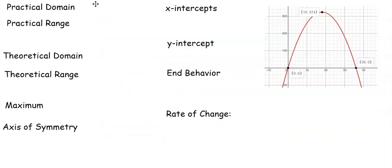Starting with practical domain, the practical domain are the x values that make sense for this problem. So lengths that would work for a fence for Waskell would be between 0 and 36 feet.